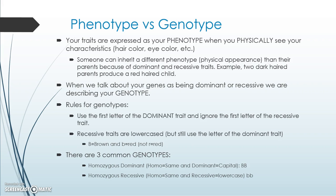When you talk about your actual genes — the letters, the alleles like BB, Bb, or bb — that's your genotype. You can see a genotype being exhibited as a phenotype in some cases, but you can't always determine the genotype just by looking at someone. You could have a dominant-appearing trait just by inheriting one dominant allele from one parent, making it hard to tell if you have a purely dominant or a mixed genotype.